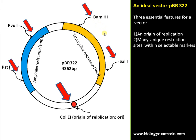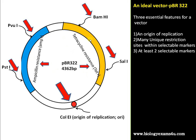The third essential feature is the selectable markers. Here there are two selectable markers: first is the tetracycline resistance region, and the second is the ampicillin resistance region. This region has genes that impart resistance against ampicillin, and this region has genes that impart resistance against tetracycline antibiotic.